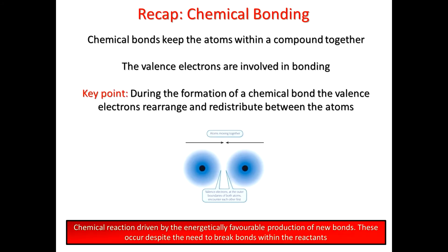Before we talk more about chemical reactions, we need to recap on chemical bonding. Chemical bonds are what keep atoms linked together — they're connected. Without these chemical bonds, atoms would fly away and everything would be a vapor or a gas, and therefore nothing solid or liquid would exist. The reason that atoms bind together is because the valence electrons are involved in bonding.